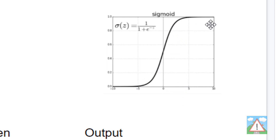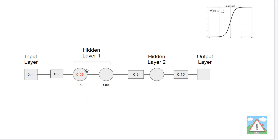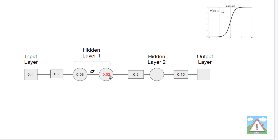Any input less than minus 5 or more than 5 will give us an output of either very close to 0 or very close to 1 — you can see it tails off. The values only really vary between about minus 2 and plus 2. So it has the effect of introducing non-linearity and also normalizing our results between 0 and 1. So what actually happens is when we've calculated our value into the hidden layer, we then apply the sigmoid (activation function) to get our output value.